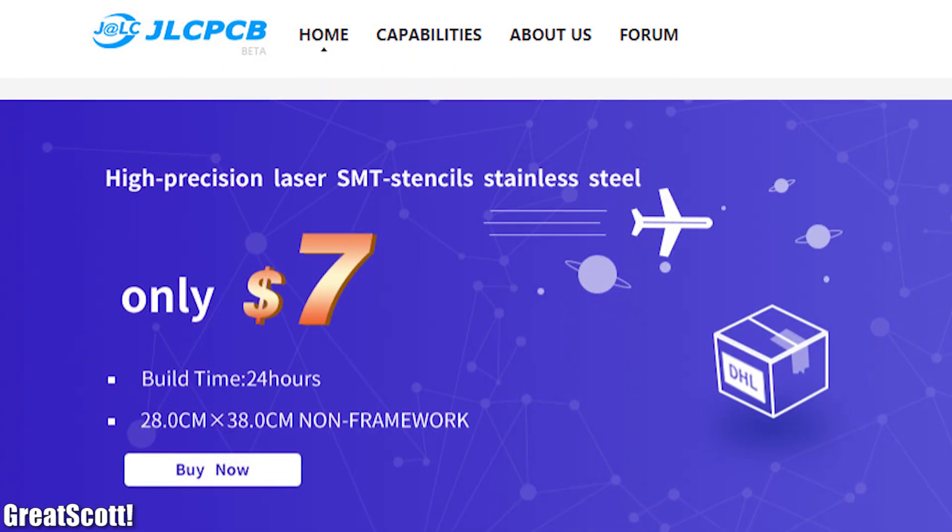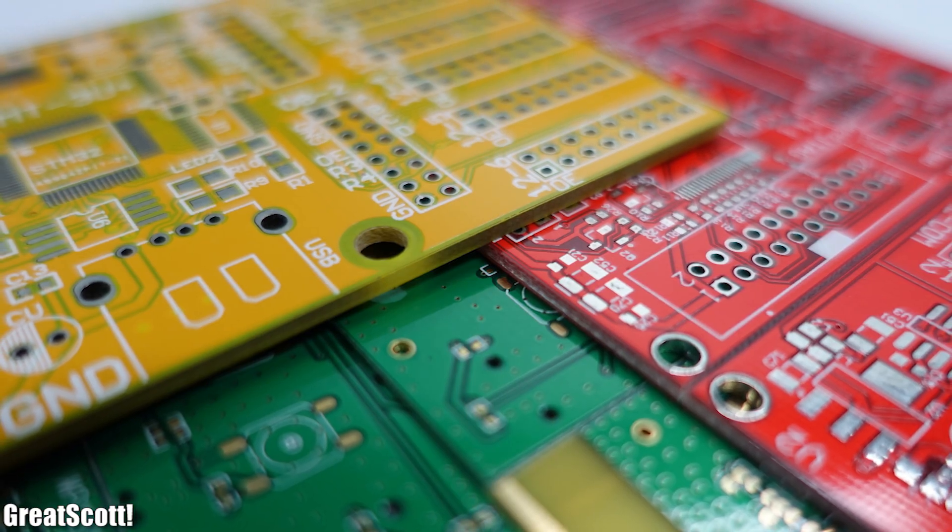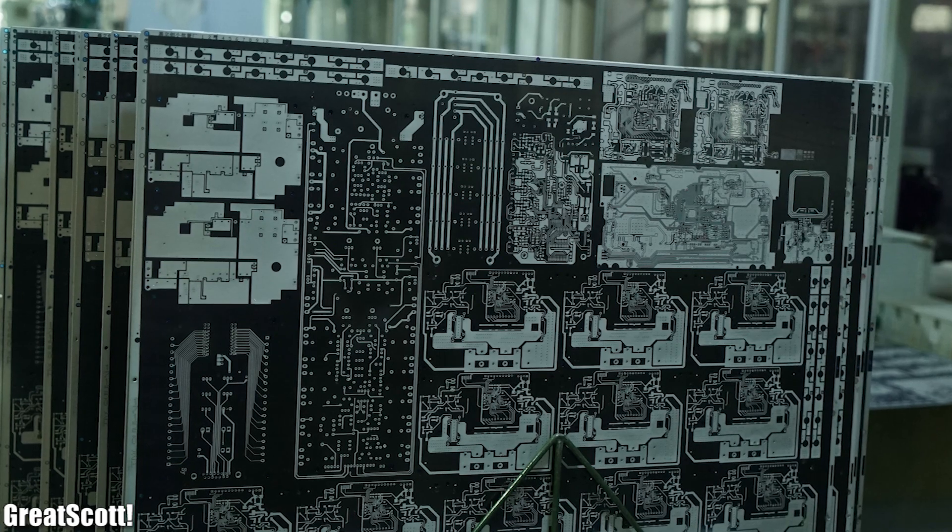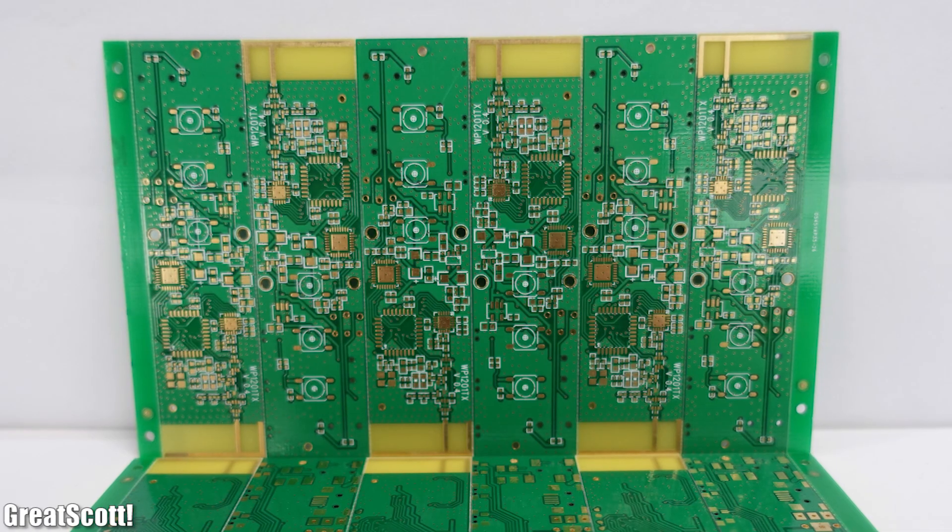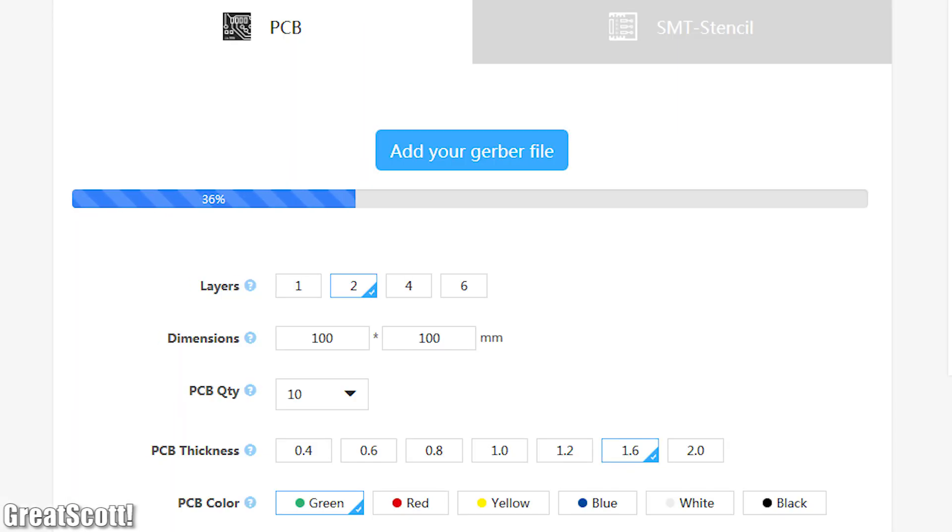This video is sponsored by JLCPCB where you can order custom PCBs with ease. Their digital manufacturing technology ensures high quality and accuracy for a price of only two dollars for 10 PCBs with 48 hours quick turnaround.